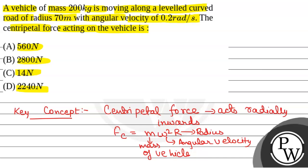we have been given mass of vehicle is 200 kg, radius of circular path r is 70 meter, and the angular velocity omega is 0.2 radian per second. So,